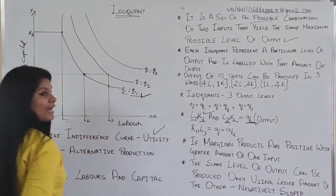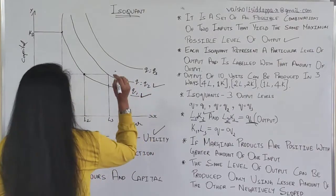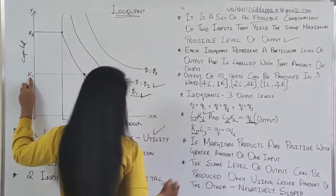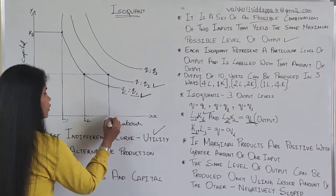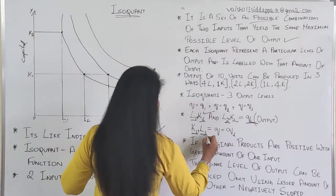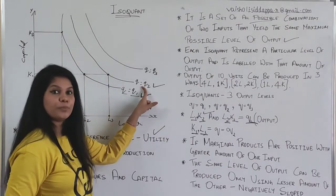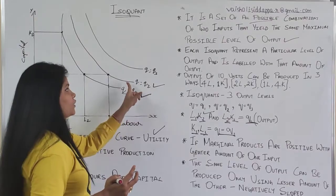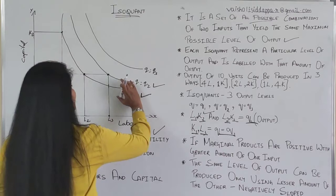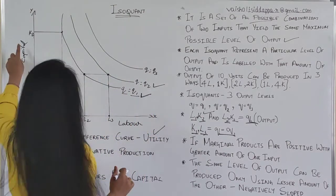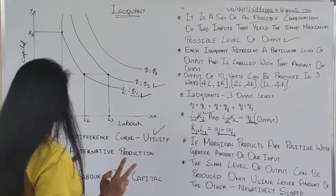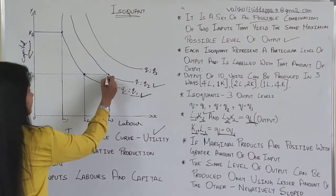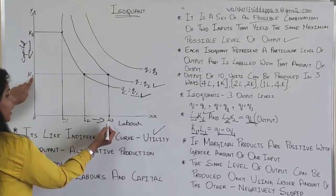Moving to Q equals Q2: when you are using capital K1 and labor units L3, the output you are getting is Q equals Q2. Then there is Q equals Q3, which is higher than Q2. To reach Q3, both labor and capital should increase. To increase labor units, we are reducing capital — so in this combination we are using more of labor and less of capital, which is K1 and L3, to produce Q equals Q2.